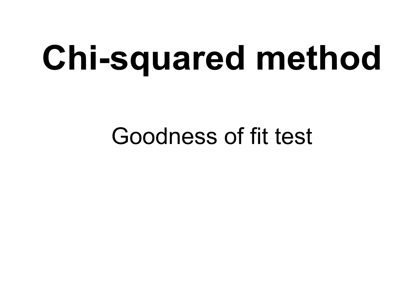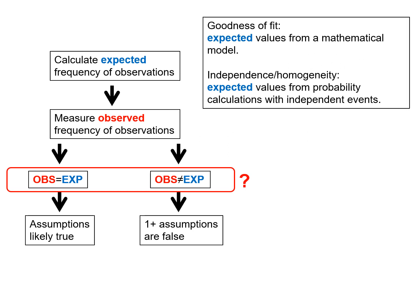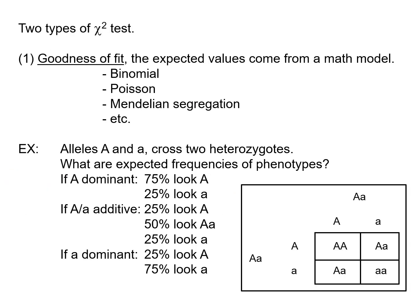In this video we're going to talk about an example of the goodness of fit test. This diagram shows the logic of how chi-squared works. As mentioned before, there are two types of tests: the goodness of fit test and the independence or homogeneity test. The first of these is the goodness of fit test.